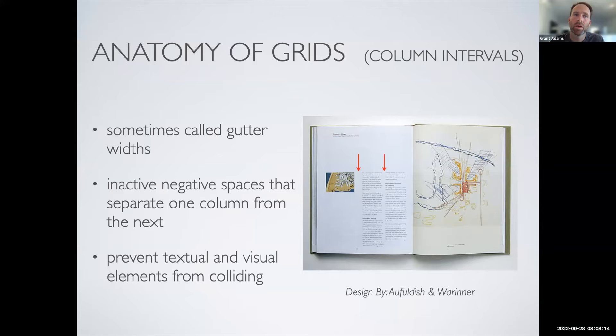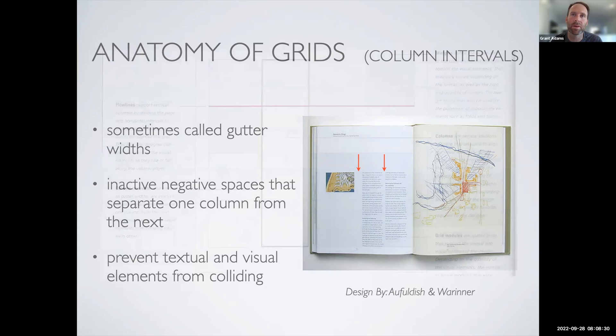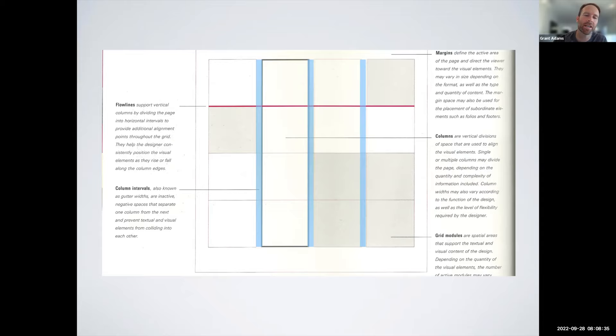Column intervals, or gutter widths, are the inactive negative spaces in between columns. We need those so that text doesn't collide with the next column — it's absolutely critical. While we may have multiple columns, we always need a little bit of space between them. Otherwise you wouldn't know where one line of text ended and the next started. Those column intervals become a really important piece of the design process.